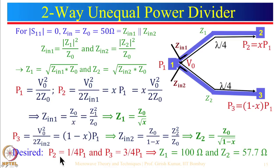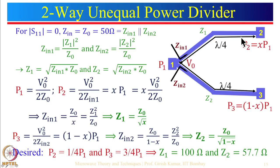For the problem where one fourth of power goes to one port and three fourths to the other: Z1 = 100 ohm and Z2 = 57.7 ohm. Note that less power going to a port means higher impedance, which means smaller width. More power going means lower impedance and larger width — analogous to pipes: a smaller diameter pipe carries less water.